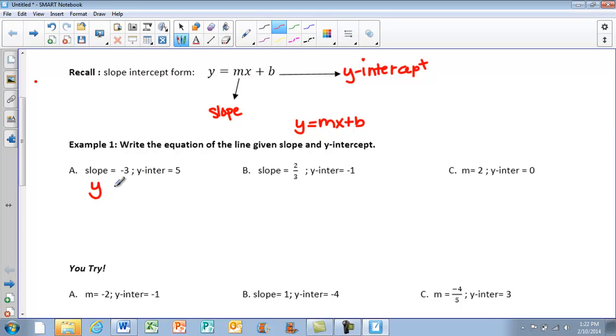So if I go back to y equals mx plus b, we said that our slope is the m value. So when I'm writing my answer or my equation, I'm going to have y equals negative 3x. And then for my intercept, it says that it's 5. So that's going to be my b value. Make sure to always include that sign in front. So for our first one, our equation is y equals negative 3x plus 5.